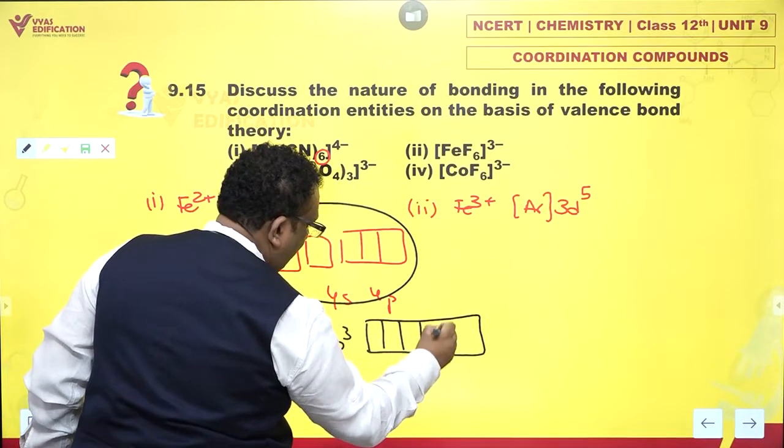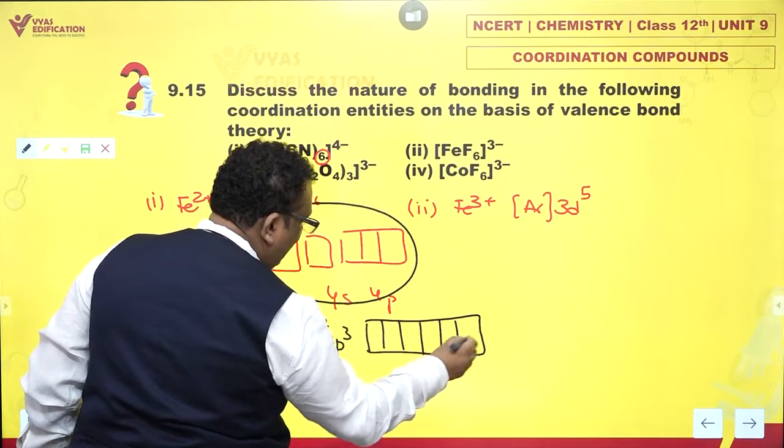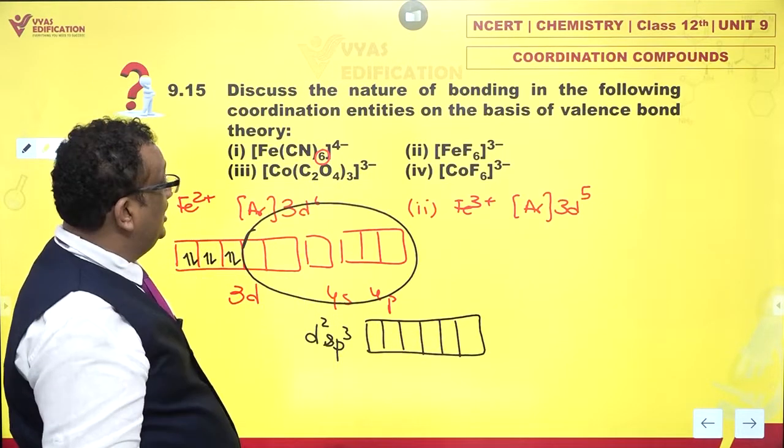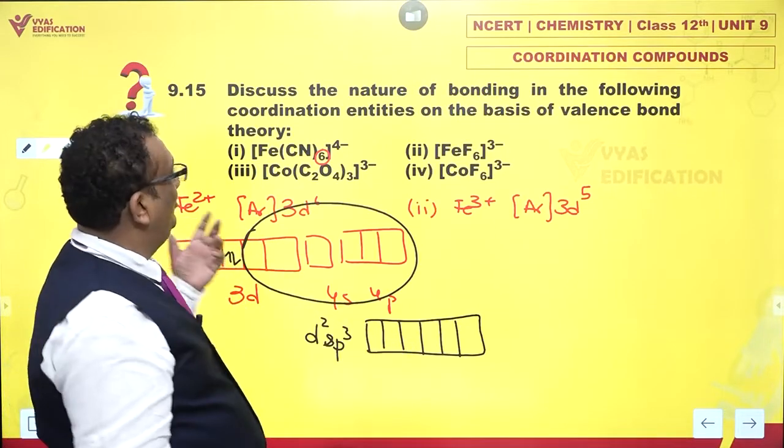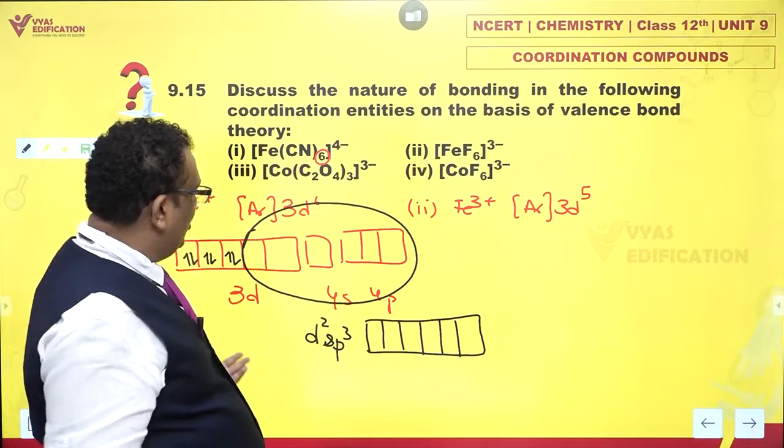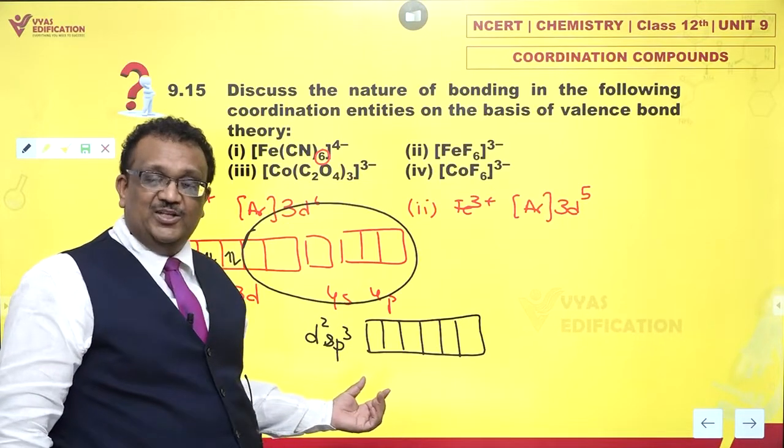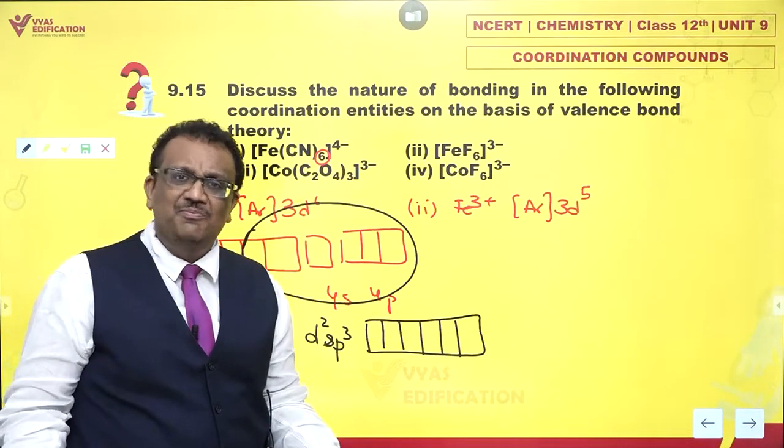1 cyanide gives 1 electron pair. 6 cyanides will give 6 electron pairs. And where would these electrons stay? They will stay in D2SP3 hybrid orbitals. And they are all identical. 1, 2, 3, 4, 5, 6. And that makes the geometry octahedral. So this is the nature of bonding. And I have D2SP3 hybridization.